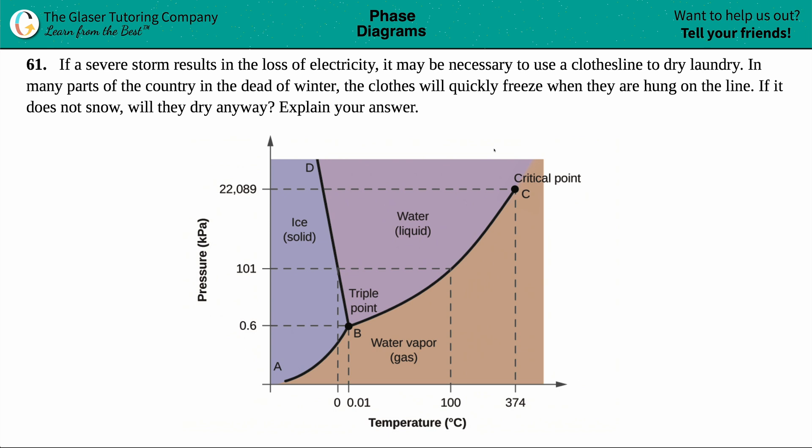Number 61. If a severe storm results in the loss of electricity, it may be necessary to use a clothesline to dry laundry. In many parts of the country in the dead of winter, the clothes will quickly freeze when they are hung on the line. If it does not snow, will they dry anyway? And then explain your answer.